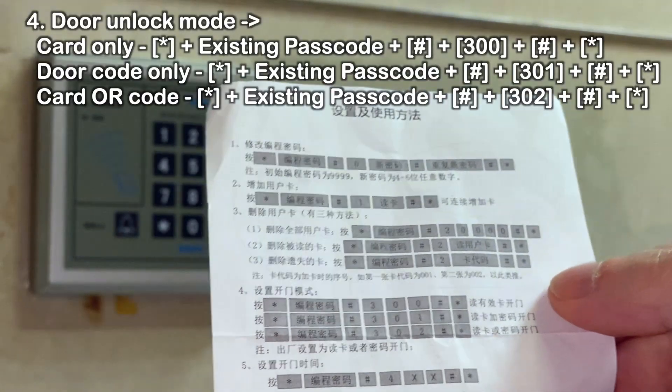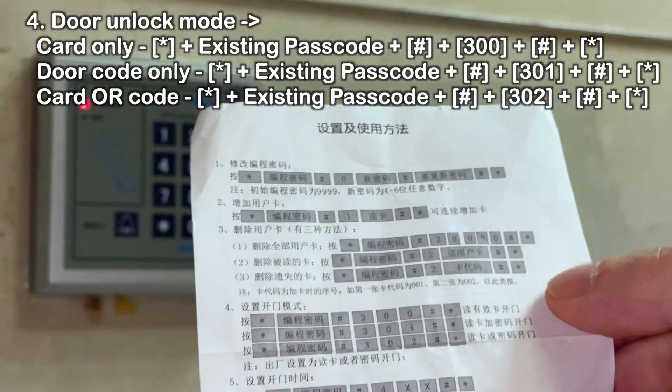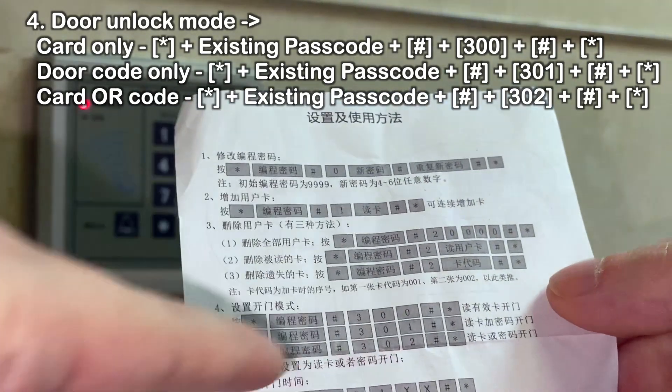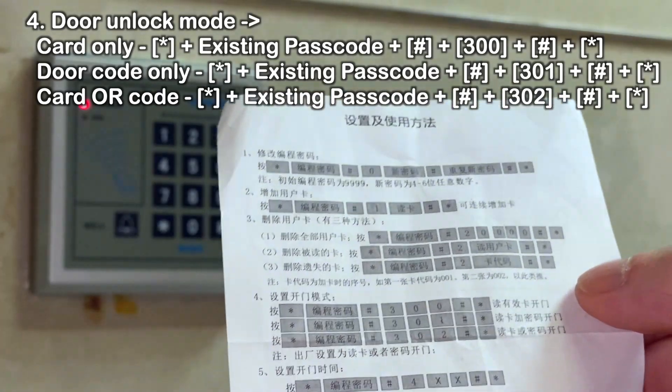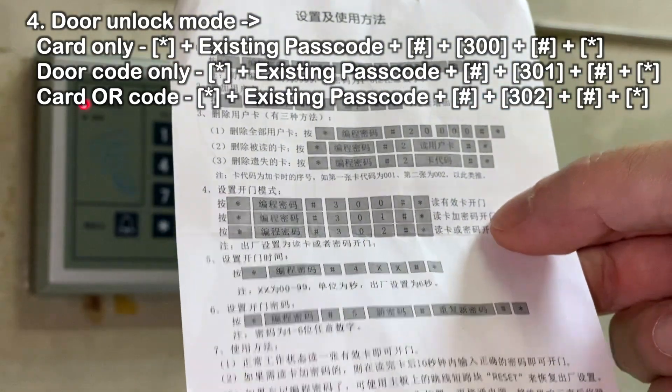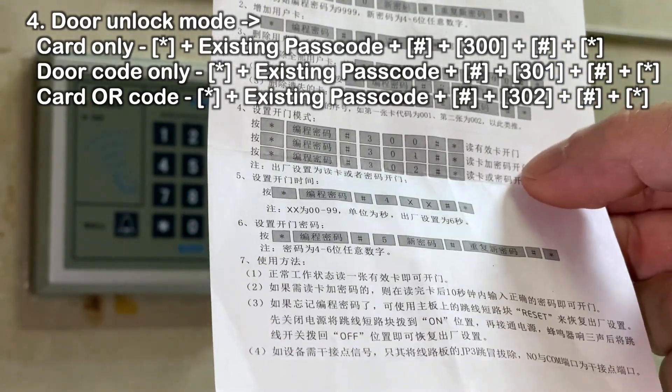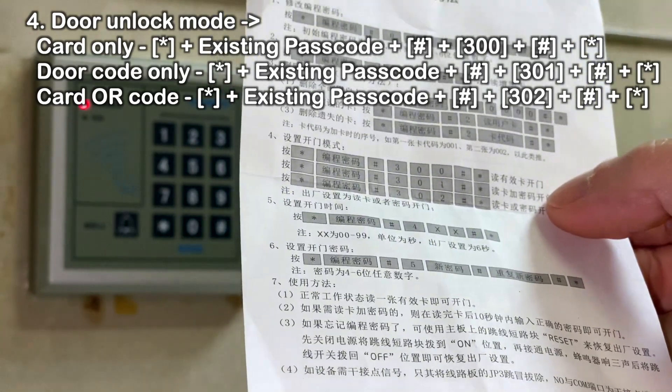So the fourth section is for the door unlock mode. So basically you have three choices. One is to just use the cards, which is basically the first one. Second one is if you use just the secret code, the door code I guess you could call it. Up till now when we didn't have the cards, we had to use just the door code. And the problem with that is, let's say you have one employee leaving, well in that case you have to change the door code every time someone leaves.